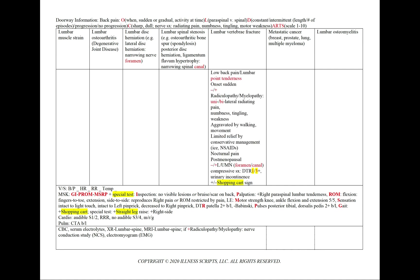In a lumbar vertebral fracture, we'll have low back pain and high-yield point tenderness. The onset tends to be sudden, and we could have either no nerve findings, a radiculopathy, or a myelopathy — uni- or bilateral radiating pain, numbness, tingling, or motor weakness. It can be aggravated by walking or movement with limited relief from conservative management since the underlying fracture is still present. The fracture can produce nocturnal pain when lying down or sleeping, and the patient is classically a post-menopausal female. Depending on fracture location, we could see lower motor neuron signs at the foramen or upper motor neuron signs — hyperreflexia, urinary incontinence, and a positive shopping cart sign — if impacting the canal.